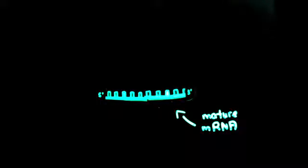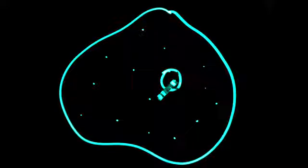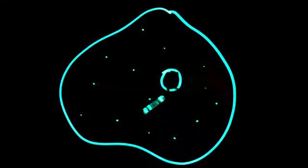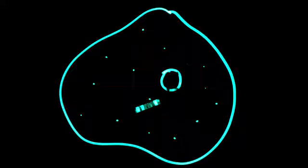A 5' cap and a 3' poly-A tail are also added to the ends of the mRNA strand during the modification. The transcription process is then completed and the mature mRNA can then leave the nucleus through a nuclear pore and enter the cytoplasm in order to continue on to the translation process.